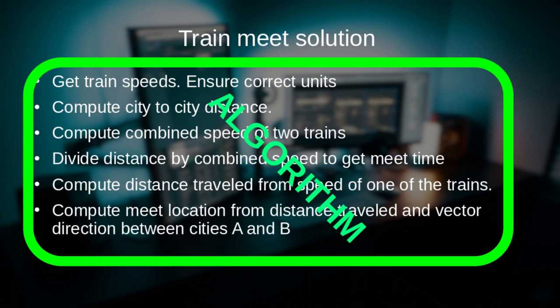What we have just described is in essence the algorithm for solving this problem. If you write this down one line at a time, you will see that we are performing some operation on every step, and this operation results in some new information that we didn't have at the beginning of the step.